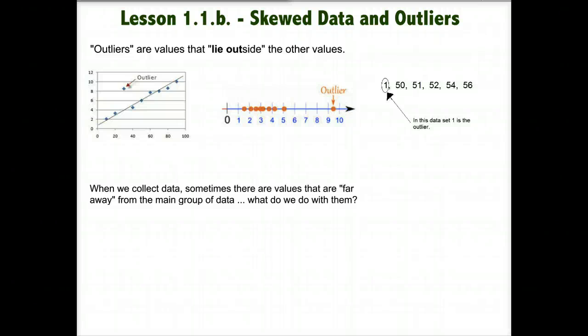This is lesson 1.1, point B: skewed data and outliers. There are three things I want you to get out of this lesson. First, given a set of data, I want you to be able to identify whether it's left or right skewed, or if it's a normal bell-shaped distribution. Second, I want you to understand how extreme values called outliers can and will affect the shape and mean of your data. Lastly, I want you to know how to use the embedded calculator in your upcoming assignment.